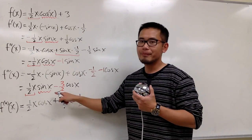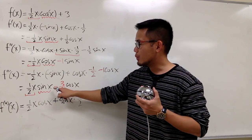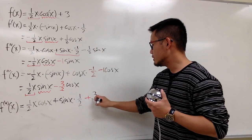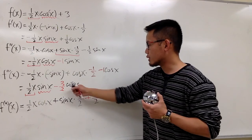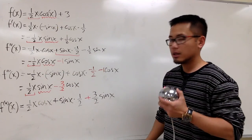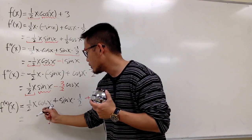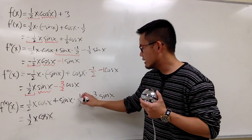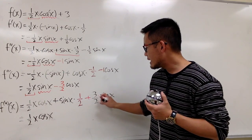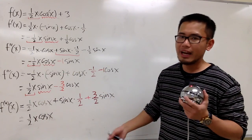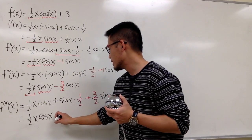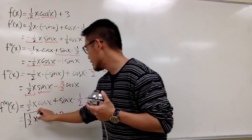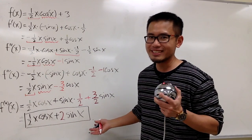For the other term, the derivative of cosine x is negative sine, but we have a negative in the front, so negative times negative gives positive, and we get positive 3/2 sine x. Combining like terms: the product rule part gives positive ½x·cosine x. Then ½ sine x plus 3/2 sine x equals 4/2, which is 2, so we get plus 2 sine x. The fourth derivative is ½x·cos(x) + 2·sin(x). Do not add +C, because this is not an integral — this is just a derivative.